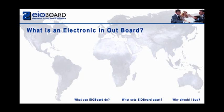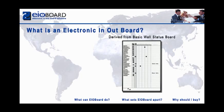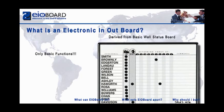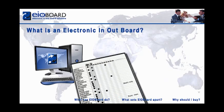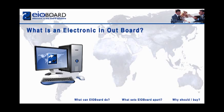What is an electronic in-out board? EOBoard was derived from the basic wall status board, which has the basic functions of moving a magnet and adding a comment. We here at EOBoard have incorporated the basic wall board into an electronic, multi-interface application. EOBoard can be accessed in multiple ways.